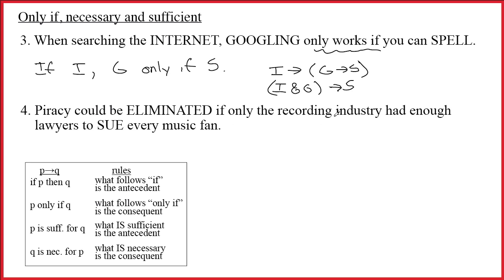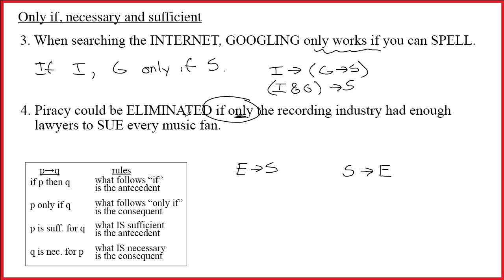Sentence number four: 'Piracy could be eliminated if only the recording industry had enough lawyers to sue every music fan.' Is it E→S or S→E? We have to ask about 'if only.' We have 'if then' and we have 'only if' — but what about 'if only'? It's not the same thing as 'only if.' In this case, the word 'only' isn't doing logical work. It's calling attention to the uniqueness of the condition. This sentence is really just a simple 'if,' so the correct symbolization is S→E.